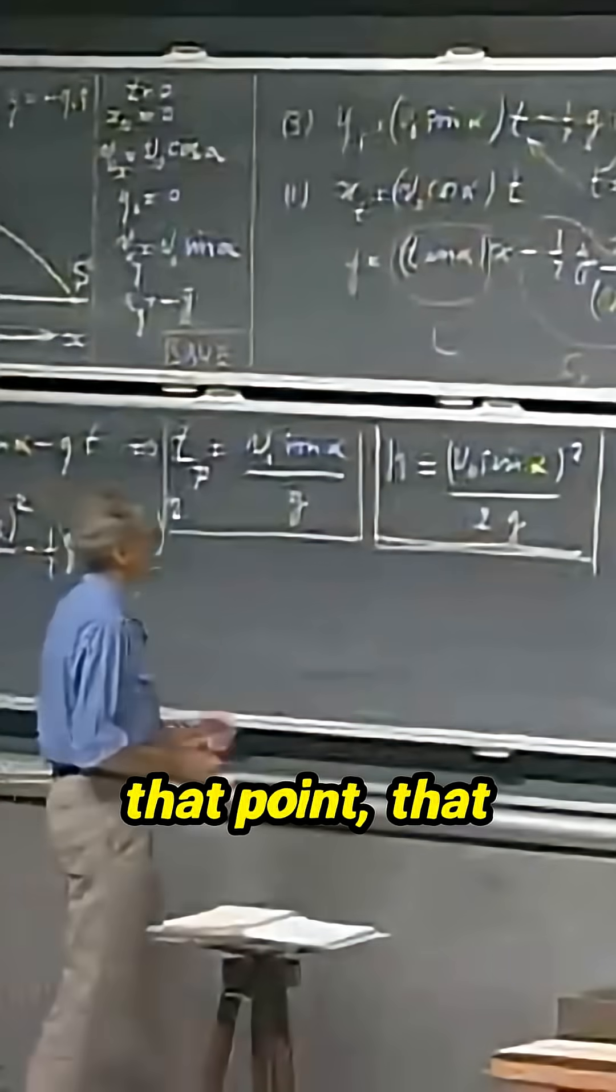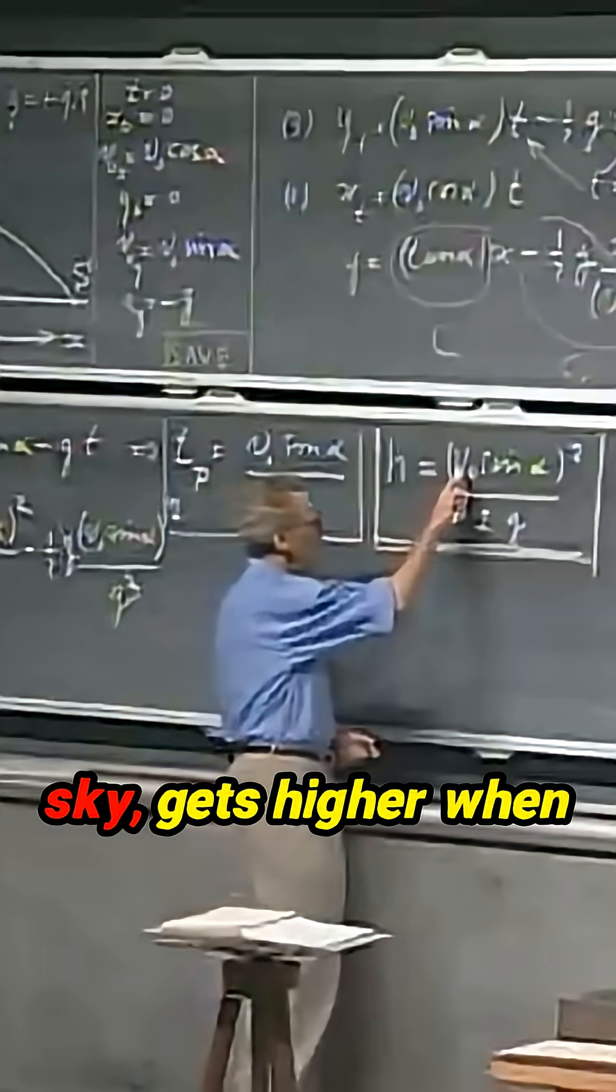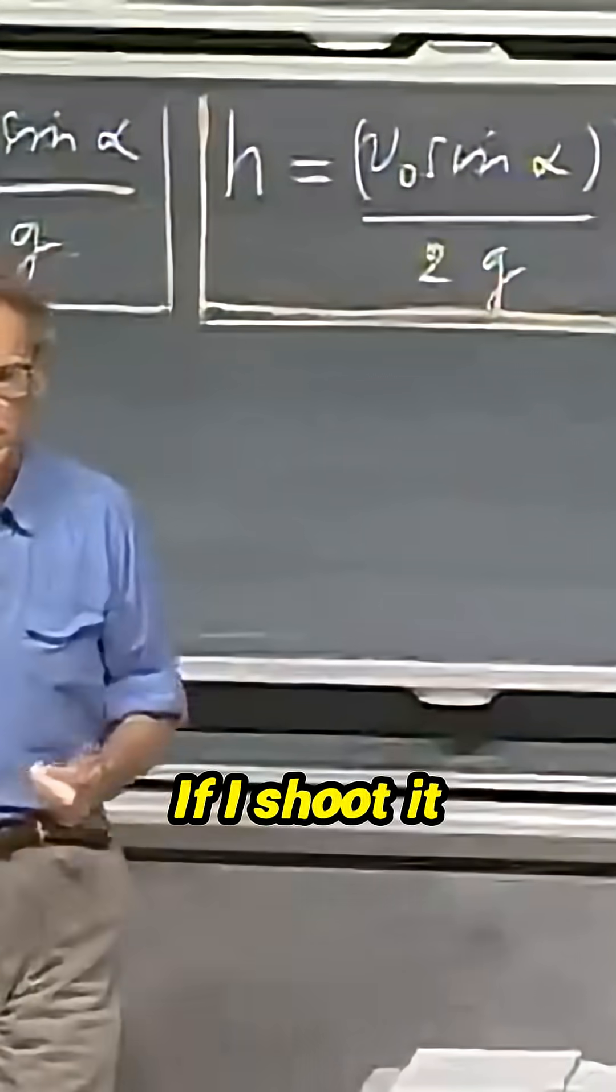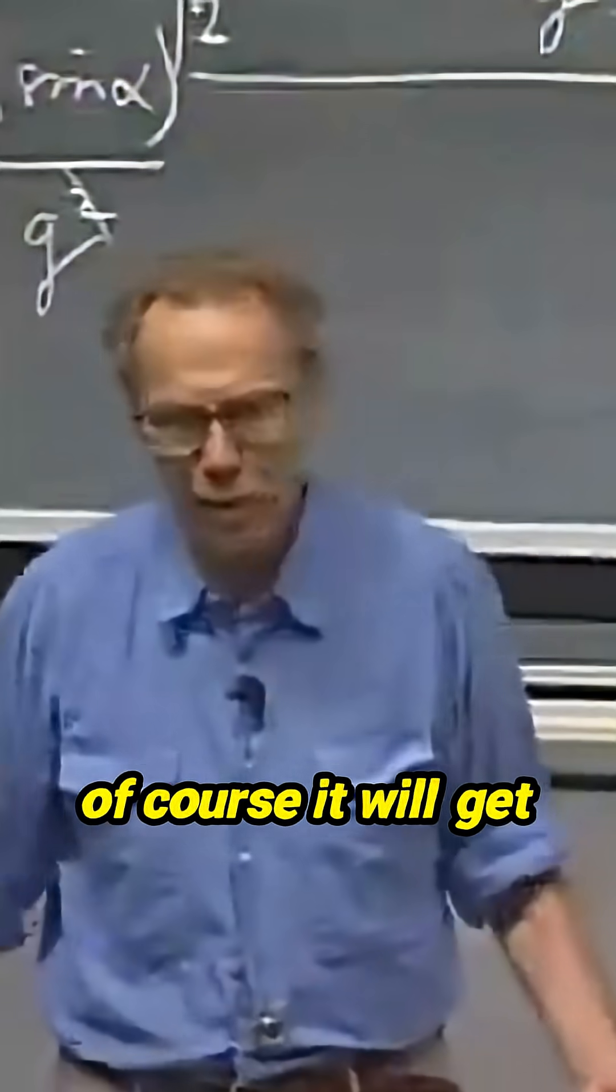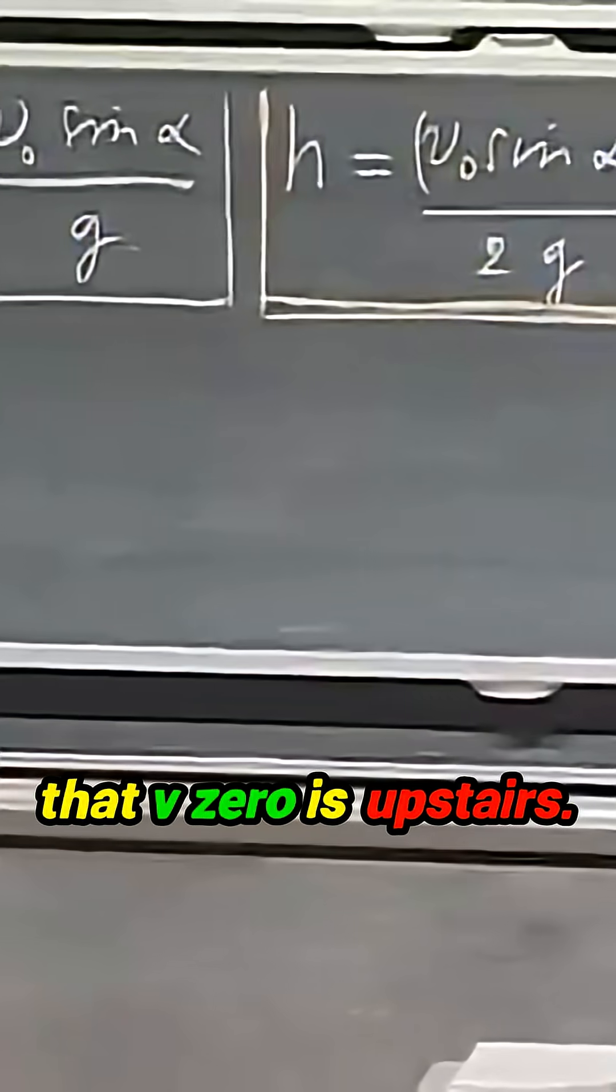Is it reasonable that that point, that highest point in the sky, gets higher when v zero is higher? Of course. If I shoot it up at a higher speed, of course it will get higher.